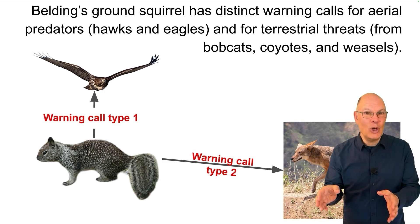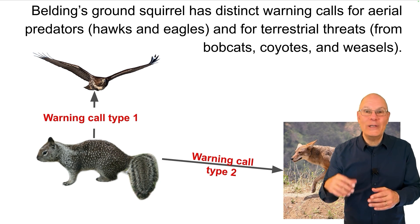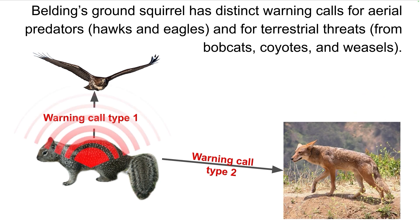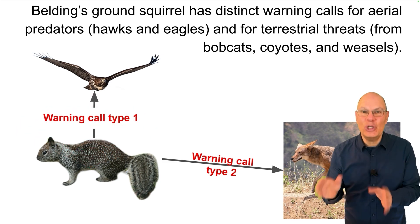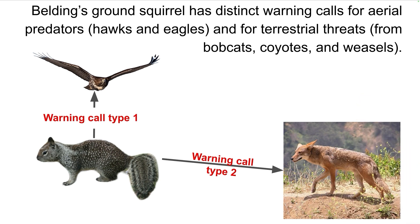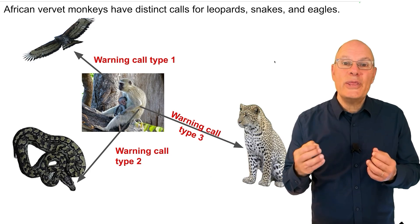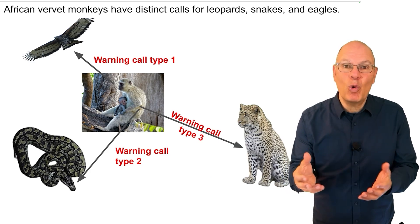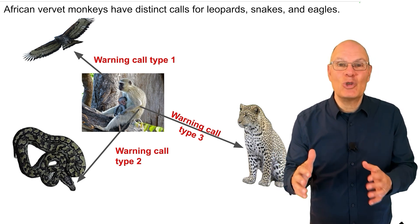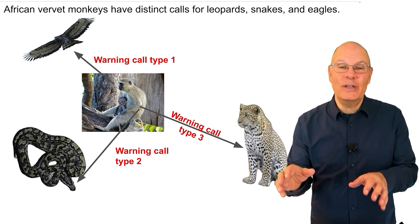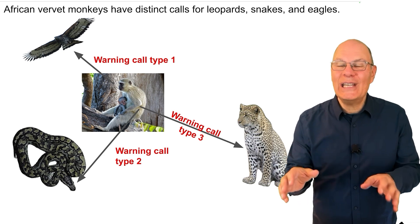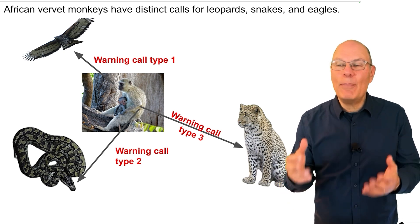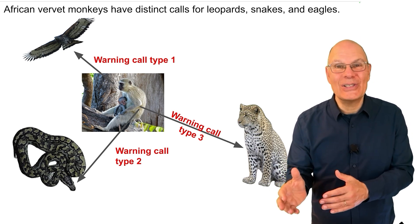Here's warning call type one for an aerial predator, and here's warning call type two for a terrestrial predator. Note that these predator warnings are not unique to the Belding's Ground Squirrel. African vervet monkeys, which are primates like us, have distinct calls for leopards, snakes, and eagles.